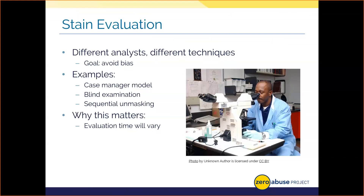Some analysts use a blind examination — totally avoiding all case details, going in devoid of information, only looking for stains based on their training in visualization, serology, and DNA. Others use sequential unmasking, where they make certain key analytic judgments before being exposed to potentially biasing information. They might examine evidence and avoid case notes until they hit a roadblock, reading only a quick case synopsis before calling an investigator.